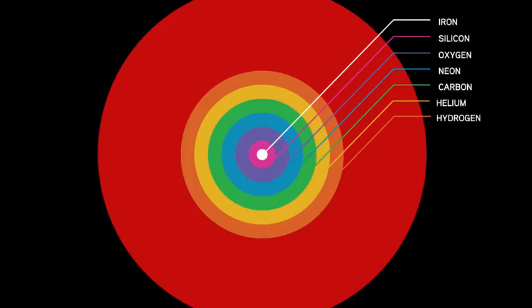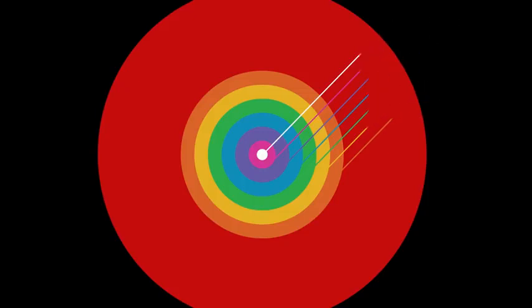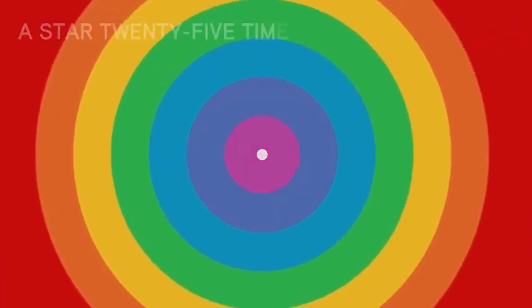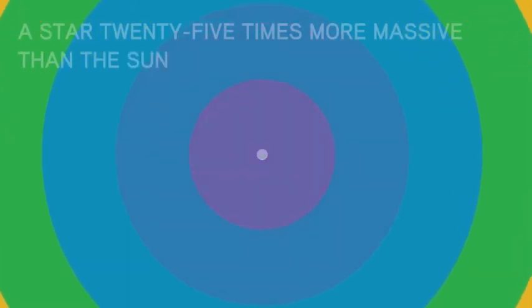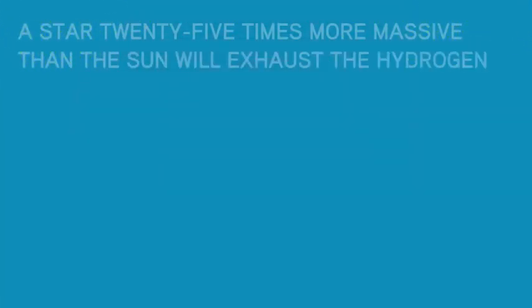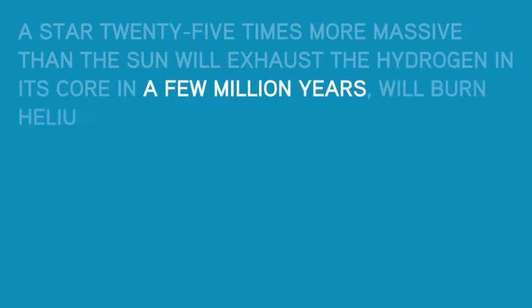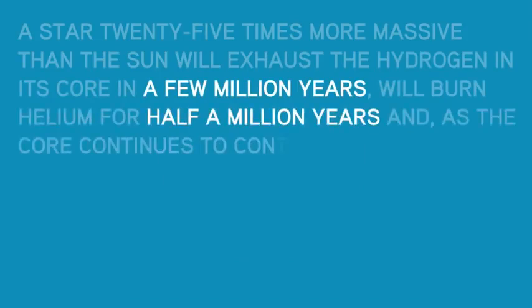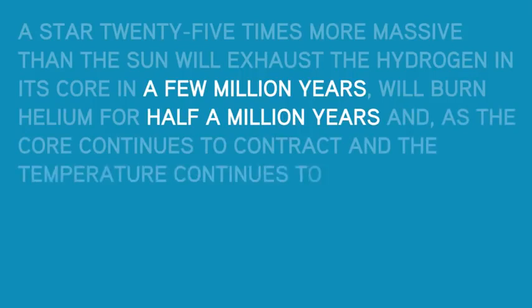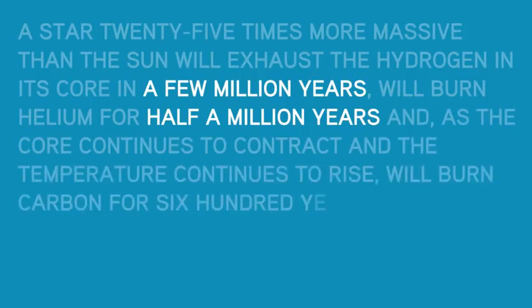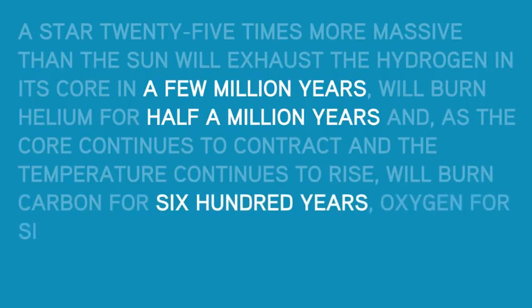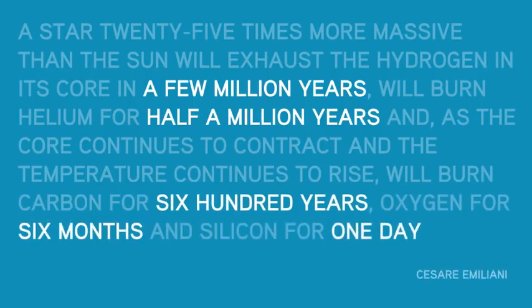I'd like to read to you Cesare Emiliani's wonderful description of the final few million years in the life of a dying huge star. A star 25 times more massive than the Sun will exhaust the hydrogen in its core in a few million years, will burn helium for half a million years, and as the core continues to contract and the temperature continues to rise, will burn carbon for 600 years, oxygen for six months, and silicon for one day.